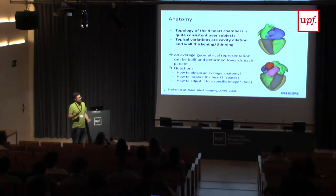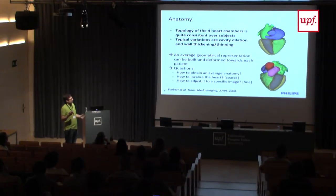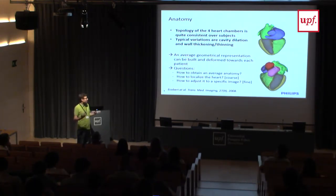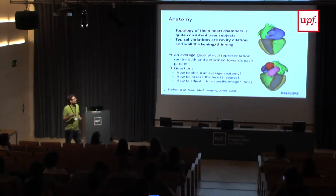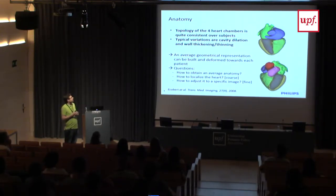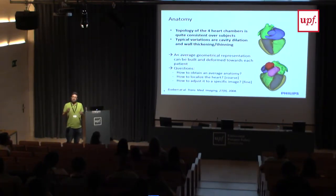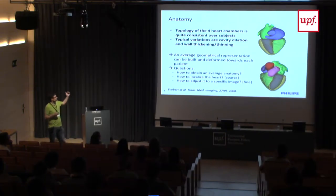We have seen normal and pathological hearts, and how the heart can adapt in shape when there is a problem — hypertension, a malfunctioning valve. There are many possible variations, but the topology of the heart is quite consistent across subjects. You have deformations: dilation, wall thickening — global or local. Because of this consistency, image processing has mainly used a model of the heart (sometimes called an atlas) and mapped this generic average model to each patient.